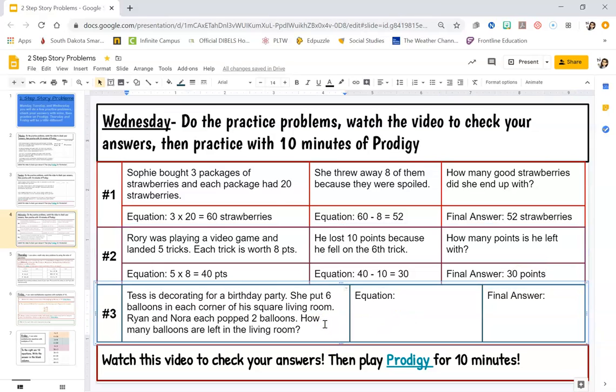Hopefully you guys are doing awesome so far. Let's read this last one here. Tess is decorating for a birthday party. She put six balloons in each corner of her square living room. Ryan and Nora each popped two balloons.